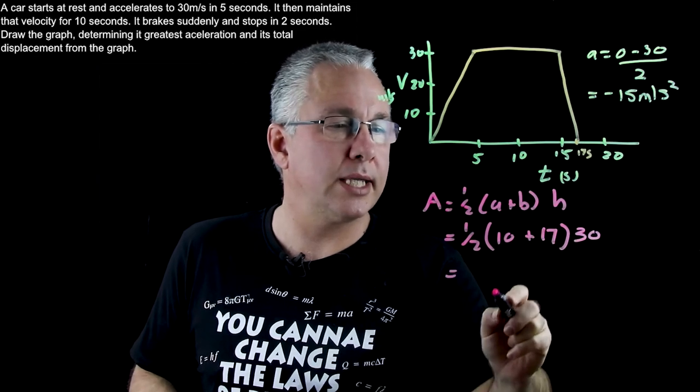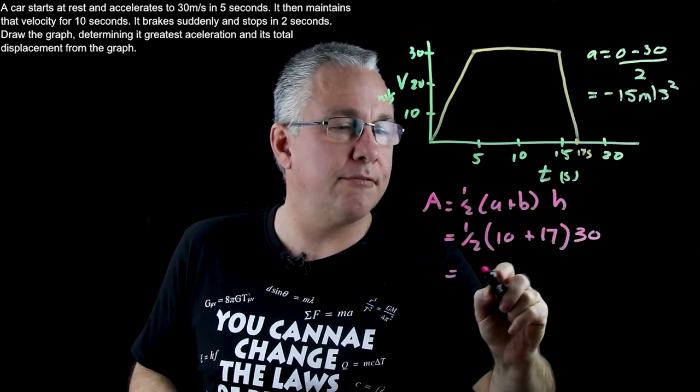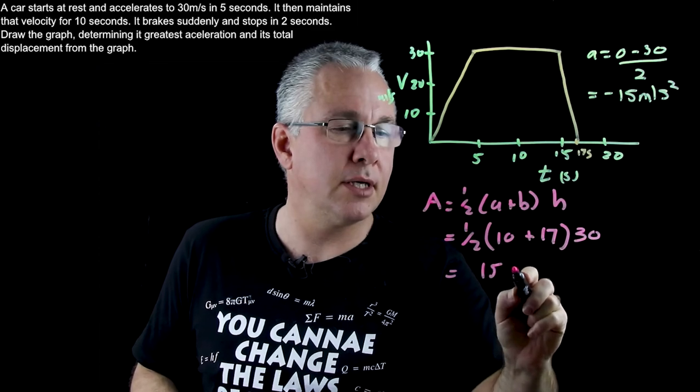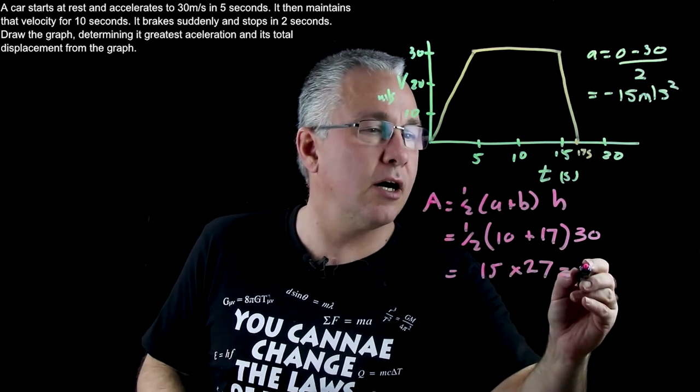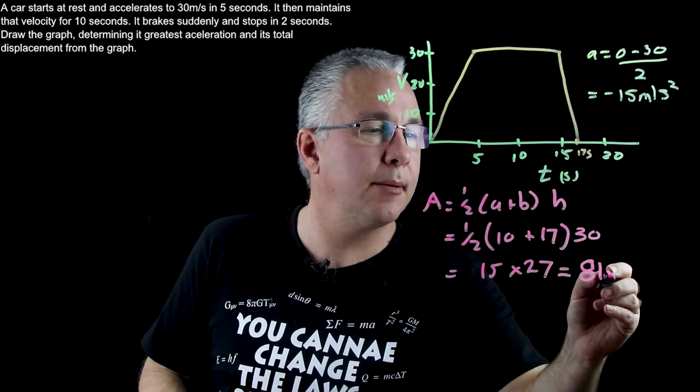Now when you work that out you're going to get 15 which is the half times 30 multiplied by the 27 and you're going to get an answer of 81 meters.